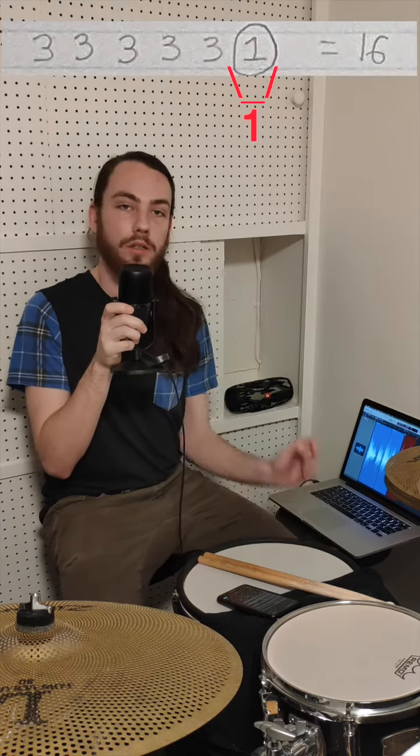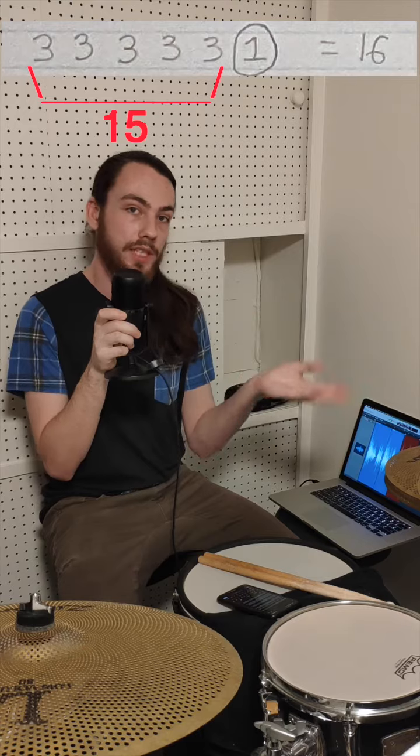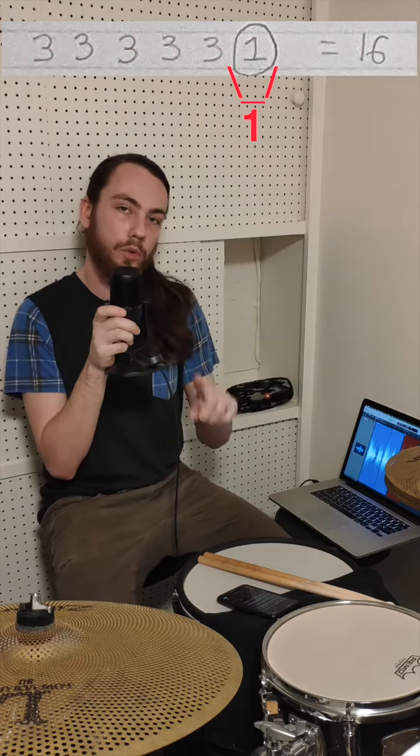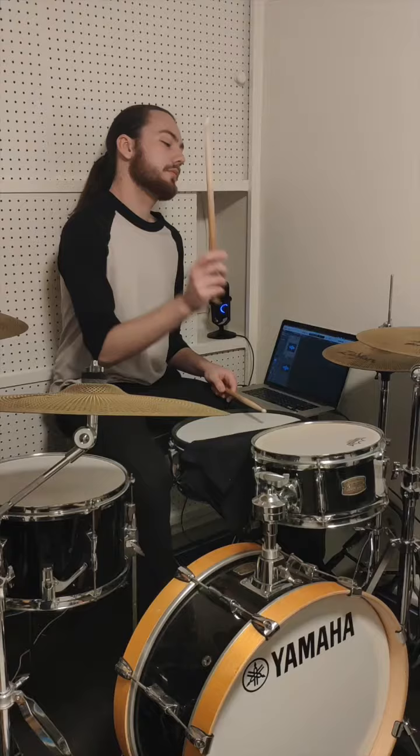So we're going to do 5 groups of 3 — that's 15 — and 1 group of 1 at the very end. That's going to line us up back to beat 1. Here's what that sounds like.